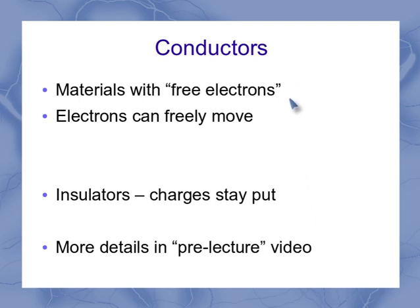That means the electrons can freely move around in the material. If you exert a force on the electron, the electron can move. Remember, however, it's not the protons and neutrons that move most of the time — they're sort of solidly fixed in place — but the electrons are free to move. There are some conductors where the entire material is allowed to move, but let's focus on metals for right now.